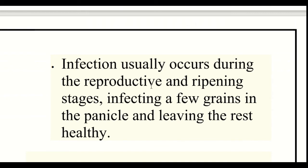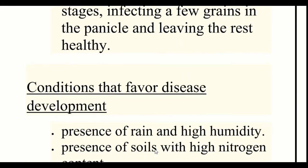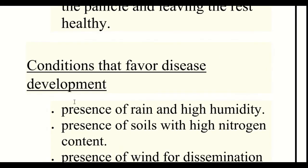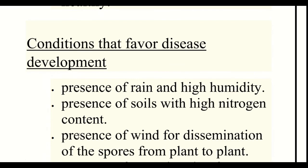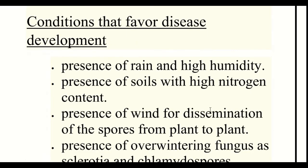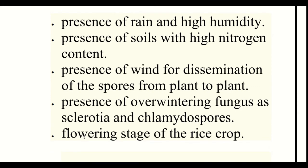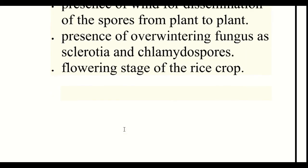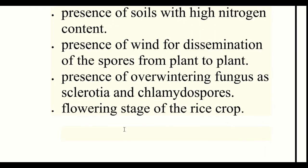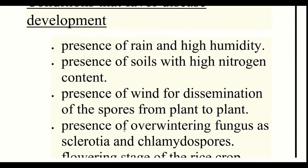Infection usually occurs during the reproductive and ripening stages, infecting a few grains in the panicle and leaving the rest healthy. Conditions that favor disease development include: presence of rain and high humidity, soil with high nitrogen content, wind for dissemination of spores from plant to plant, overwintering fungus as sclerotia and chlamydospores, and the flowering stage of the rice crop.